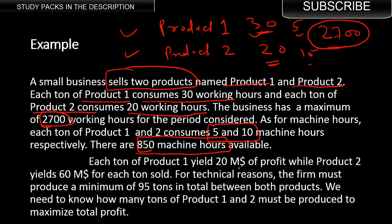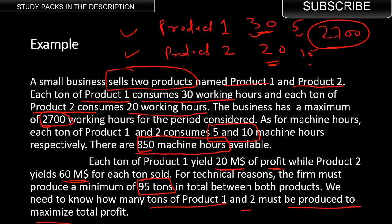Each ton of product one generates $20 million in profit, while product two generates $60 million in profit per ton. For technical reasons, the firm must produce a minimum of 95 tons total. So the sum of product one and product two must be at least 95 — that's another constraint from the business side.